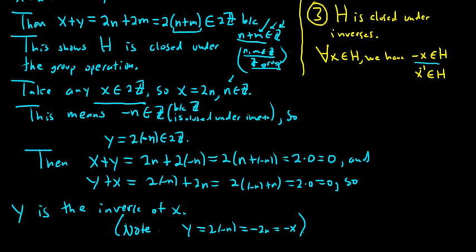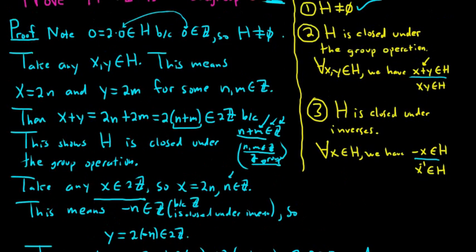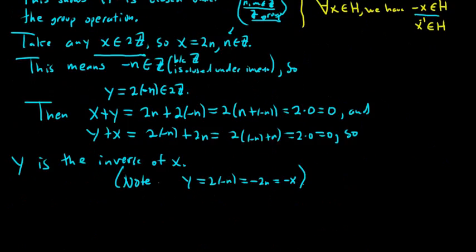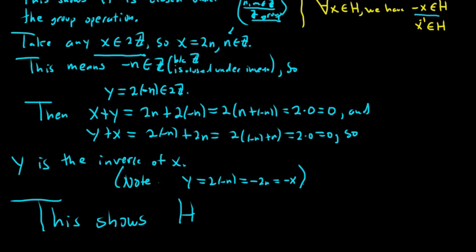So we showed all three conditions: h is non-empty, closed under the group operation, and closed under inverses. This shows that h is a subgroup of g. And that's it — I hope this video has been helpful.